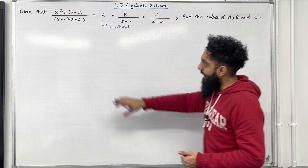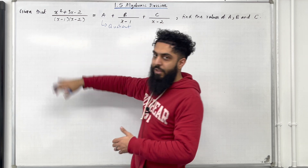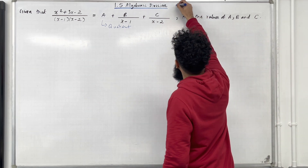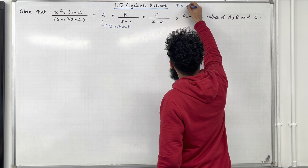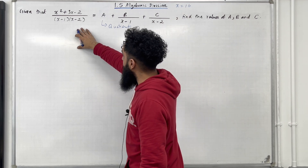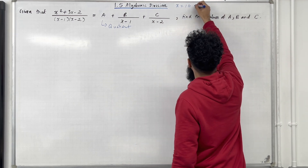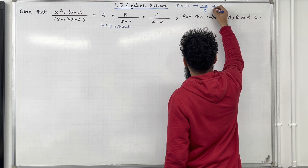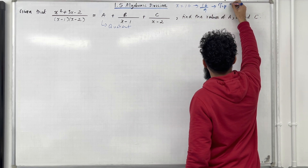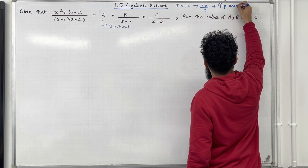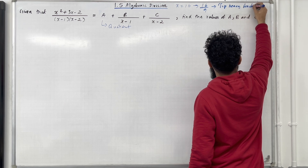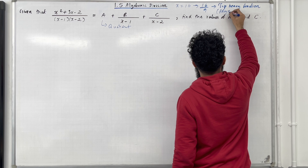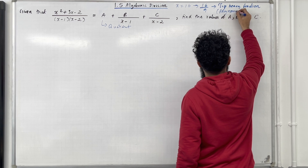Let's check that this is a top-heavy fraction. I can pick any x value — for example if I pick x equal 10. So if I substitute x equal 10 into this fraction I get precisely 16 over 9. So 16 over 9 is a top-heavy fraction.